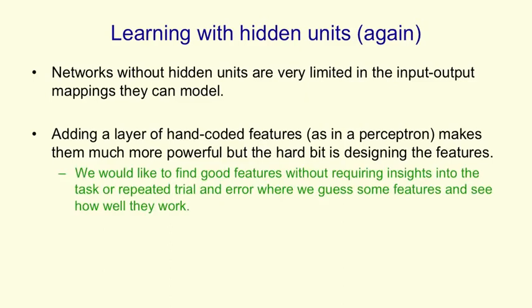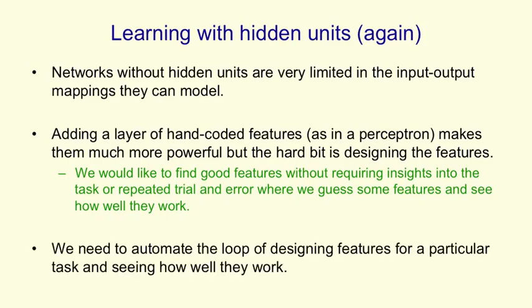What we'd like is a way of finding good features without requiring insights into the task or repeated trial and error where we guess some features and see how well they work. In effect, what we need to do is automate the loop of designing features for a task and seeing how well they work. We'd like the computer to do that loop instead of having a person in the loop.